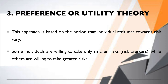The third approach is preference or utility theory. This approach is based on the notion that individual attitudes towards risk vary. Although a company is registered as an artificial person under the law, it is run by people — and therefore the attitude of each individual towards risk must be considered. One manager may be ready to take more risk, another less.